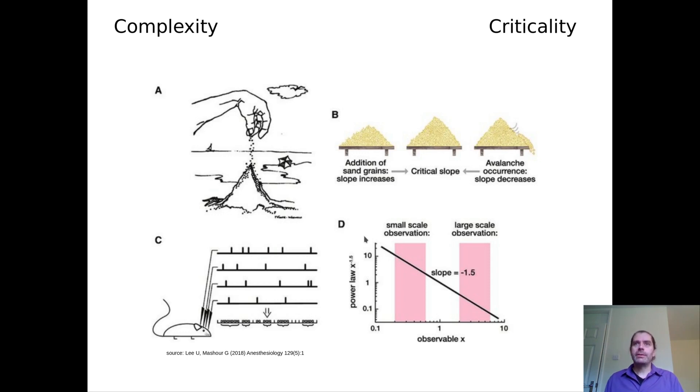The next thing I'm going to talk about is criticality. I've taken this figure from a neuroscience publication. You will see how that's relevant in a minute. So look at the top left of this figure. You have a pile of sand and somebody is sprinkling additional sand onto it. What will happen is that this pile of sand becomes steeper and steeper until at some point it loses stability and you get an avalanche of sand running down the side.